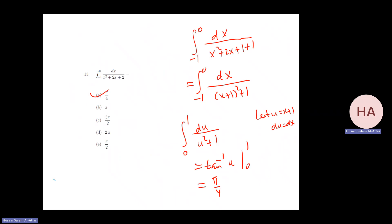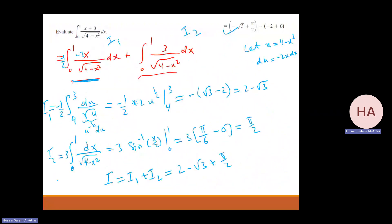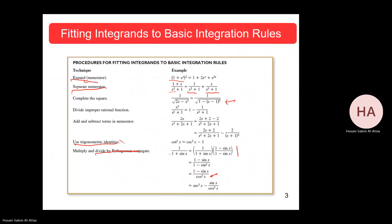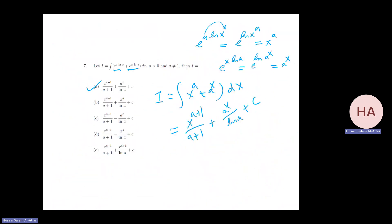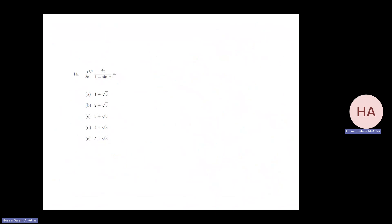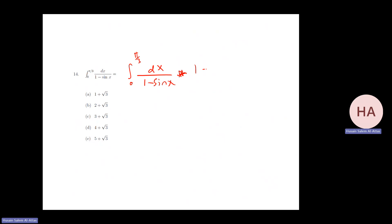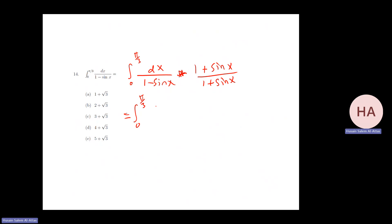For the integral of x dx over one minus sin x — when the instructor discussed this idea, I put this example. We can multiply by the conjugate. Instead of one over one plus sin, it's one over one minus sin — same idea. So I multiply by one plus sin x over one plus sin x, which means multiplying by one. So I have one plus sin x in the numerator.